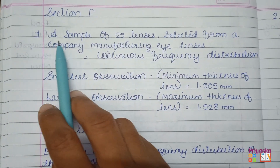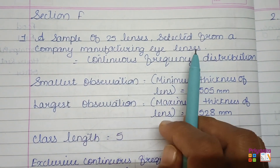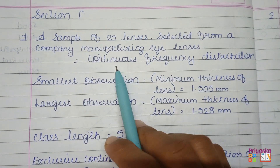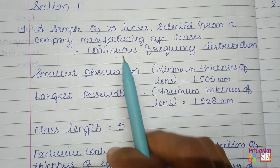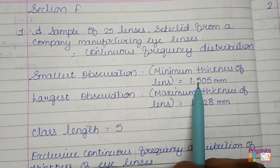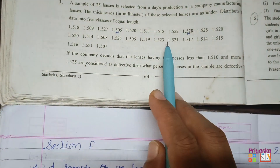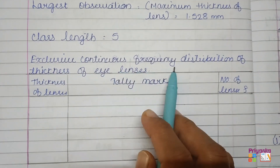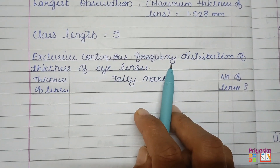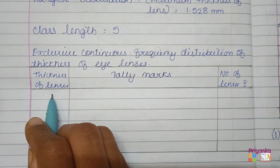First, write down the information: a sample of 25 lenses selected from a company manufacturing eye lenses. This is going to turn into a continuous frequency distribution. The smallest observation, the largest observation, and the class length are noted. We will make an exclusive continuous frequency distribution.